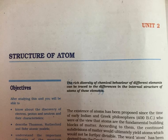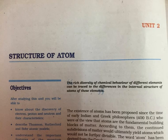Section 2.3.1: Wave Nature of Electromagnetic Radiation. James Maxwell was the first to give a comprehensive explanation about the interaction between charged bodies and the behavior of electrical and magnetic fields on a microscopic level. He suggested that when electrically charged particles move under acceleration, alternating electrical and magnetic fields are produced and transmitted. These fields are transmitted in the form of waves called electromagnetic waves or electromagnetic radiation. Light is the form of radiation known from early days and speculation about its nature dates back to remote ancient times. In earlier days, light was supposed to be made of particles. It was only in the 19th century that the wave nature of light was established.